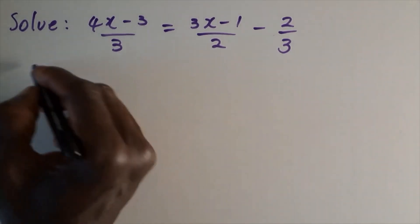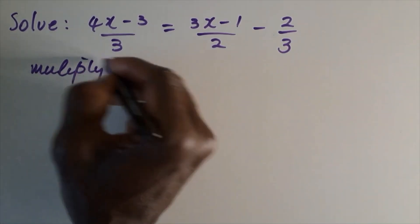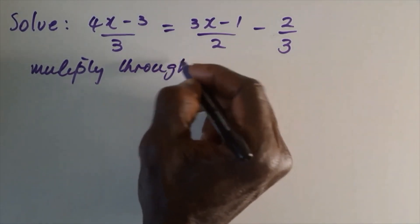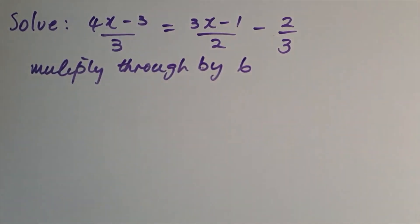Here we multiply through by 6, and that's simply because 6 is the lowest common multiple of 3, 2, and 3. That allows us to simplify this and cancel all the denominators in this case.